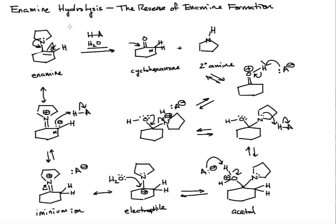This has been the mechanism for enamine hydrolysis, which is the reverse of enamine formation. The enamine has a resonance form in which the alpha carbon bears a lone pair that can be protonated. Water can then attack, installing the oxygen at the carbonyl carbon. You go through an acetal, then protonate the nitrogen to do an elimination, giving the protonated carbonyl. Through an acid–base reaction, you end up with your ketone.